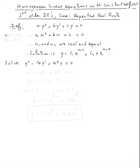then the auxiliary equation will be a m squared plus b m plus c. And in the case of two repeated real roots m one and m two, the solution will be y equals c one e to the m one x plus c two x e to the m two x.